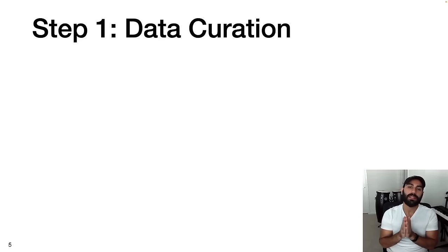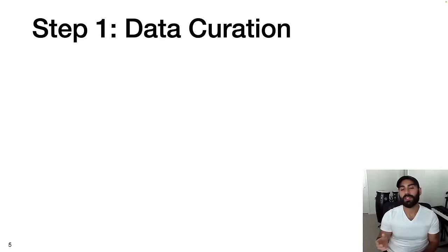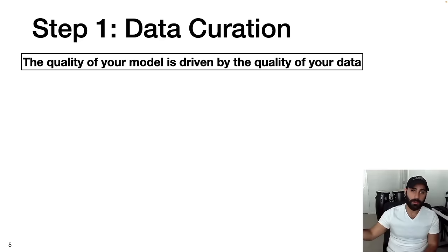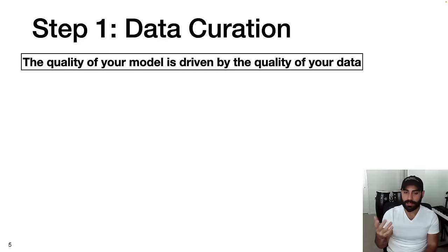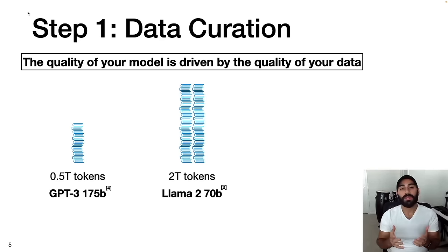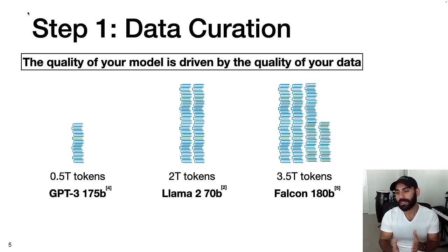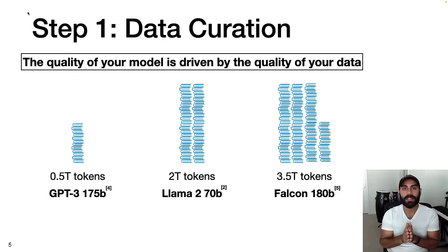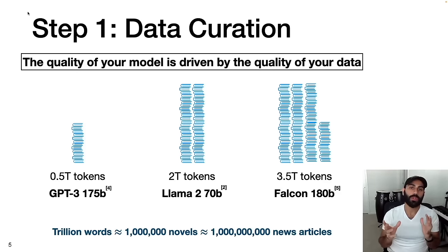Starting with data curation, I would assert that this is the most important and perhaps most time-consuming part of the process. This comes from the basic machine learning principle of garbage in, garbage out — the quality of your model is driven by the quality of your data. Large language models require large training datasets. GPT-3 was trained on half a trillion tokens, Llama 2 was trained on 2 trillion tokens, and the more recent Falcon 180B was trained on 3.5 trillion tokens. We're talking about a trillion words of text — about a million novels or a billion news articles.